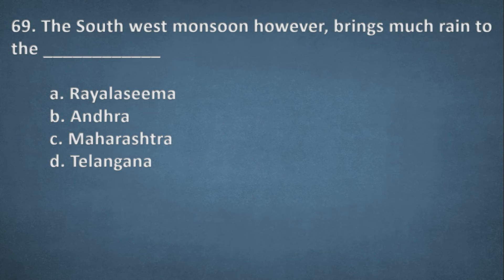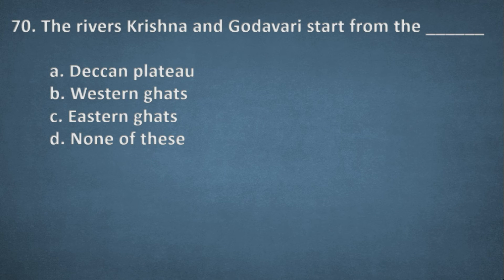Next one. The southwest monsoon, however, brings much rain into ash. Options: Rayalaseema, Andhra, Maharashtra, Telangana. The right option, D, Telangana. Next one. The rivers Krishna and Godavari starts from the options: Deccan Plateau, Western Ghats, Eastern Ghats, None of these. The right option, D, Western Ghats.